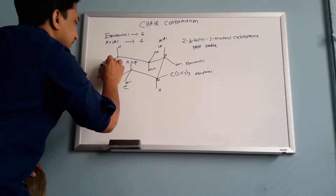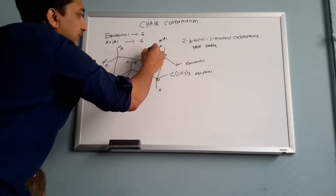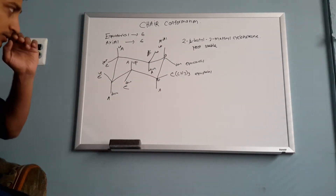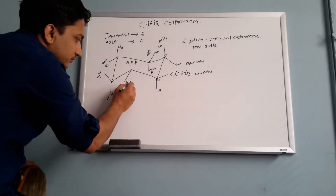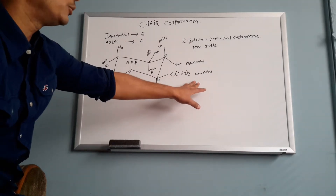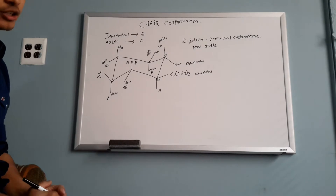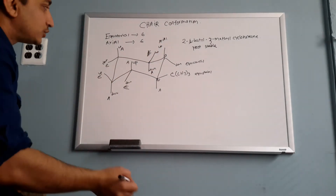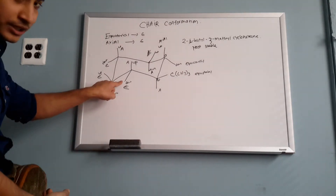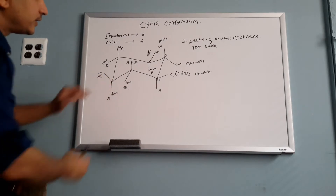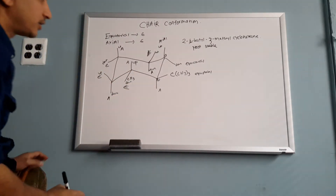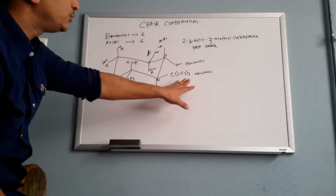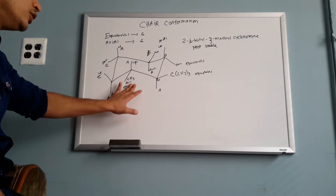Going around the chair: this is axial, this is equatorial, this is axial, this is equatorial, this is axial, this is equatorial, this is axial, this is equatorial. You put your t-butyl in the equatorial position. Number three position will have methyl — CH3. Which one is equatorial at position three? This one is equatorial. E means equatorial, and CH3 is placed there. So t-butyl is in the equatorial position and methyl is also in the equatorial position.